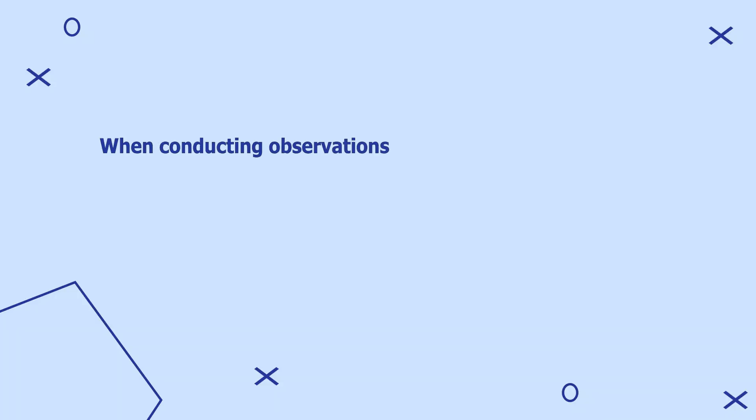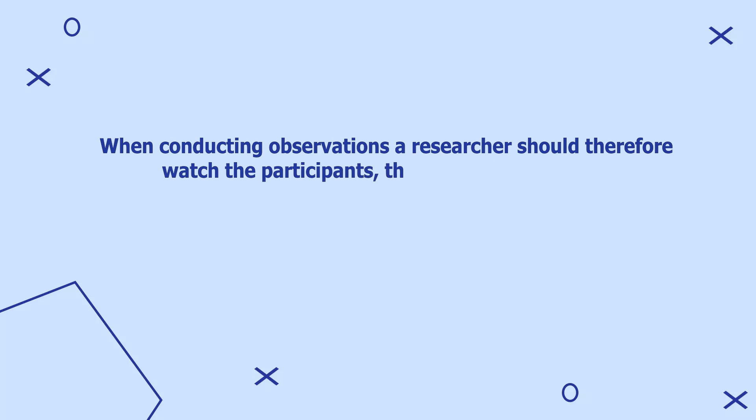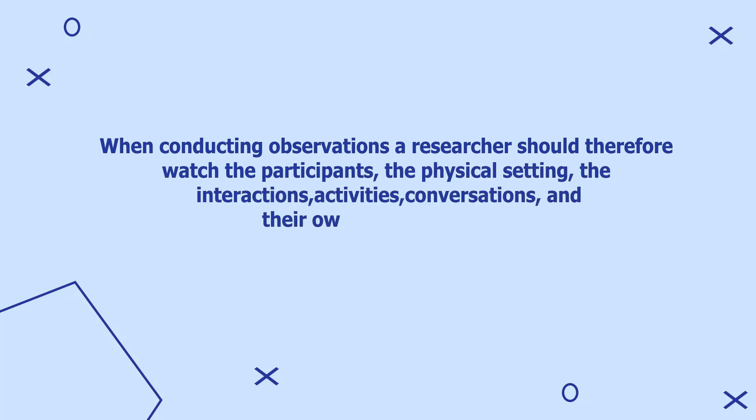When conducting observations, a researcher should watch the participants, the physical setting, the interactions, activities, conversations, and their own behaviors during the observation. Researchers should be aware that writing down everything is nearly impossible, so when conducting an observation, a researcher should start with a broad focus and then narrow down to observations that relate to their research questions or purpose.